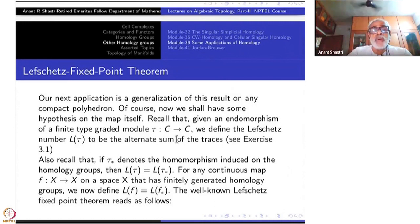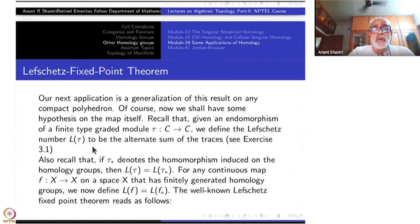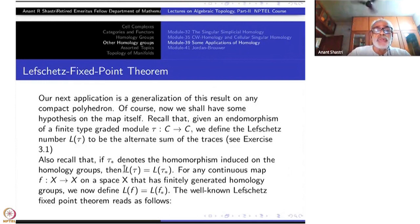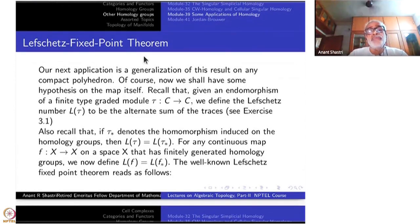Recall that given an endomorphism τ of a finite type graded module C*, we define the Lefschetz number L(τ) as the alternating sum of the traces of each τ_n. Recall also that if τ* denotes the homomorphism induced on the homology groups of the chain complex, then L(τ) equals L(τ*). For any continuous map f from X to X on a space X that has finitely generated homology groups, we define L(f) as L(f*).